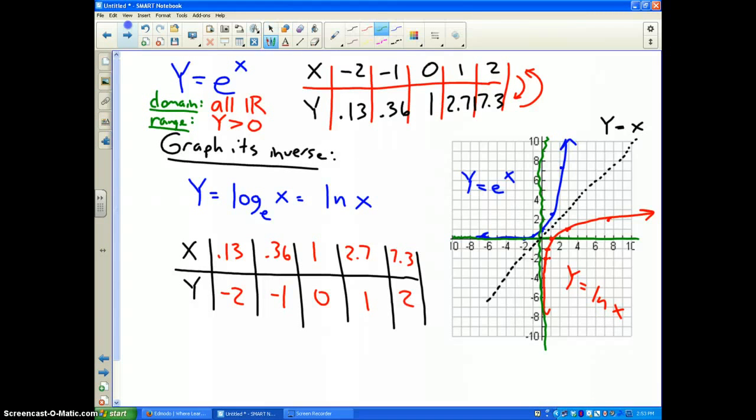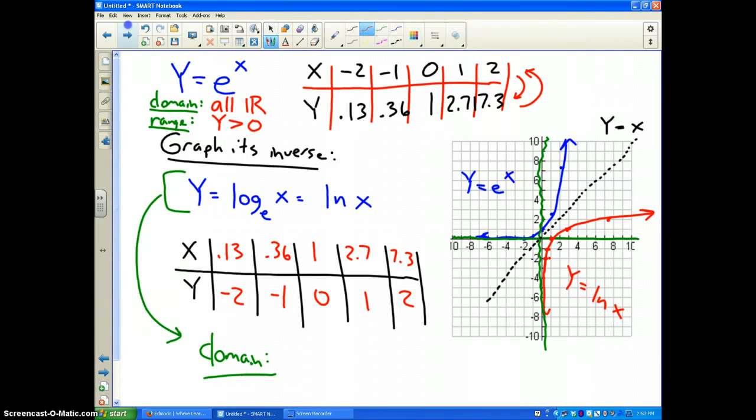Well, for the natural log, for its inverse, it works the same way as all the other log functions. You switch the domain around and the range, so therefore the domain is all X values greater than 0, and the range is going to be all real numbers.